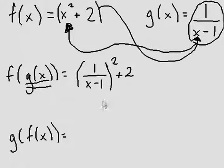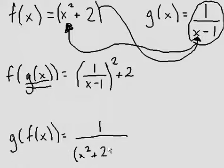So f of x becomes the x for the g of x. So 1 over bracket x squared plus 2 minus 1. That is the f of x function, and it goes inside the x for the g of x function.